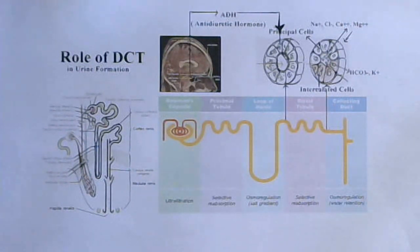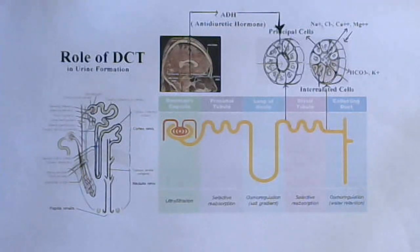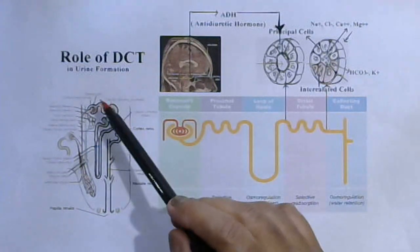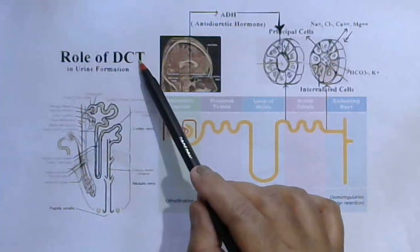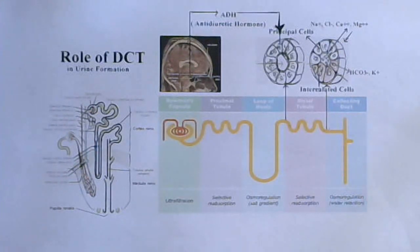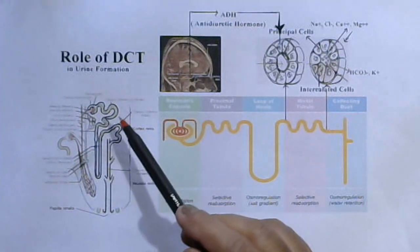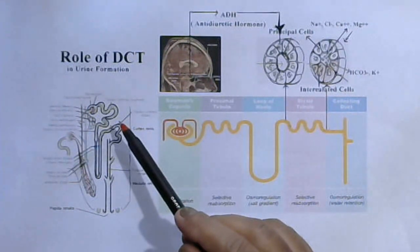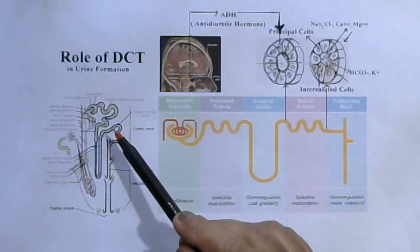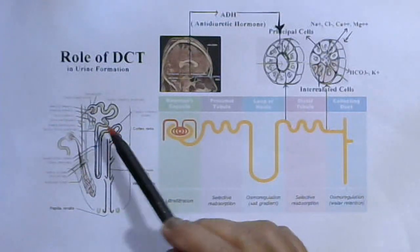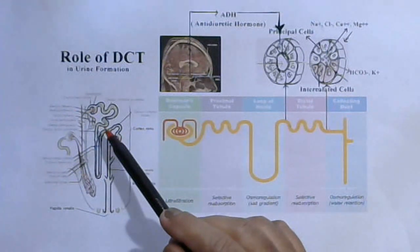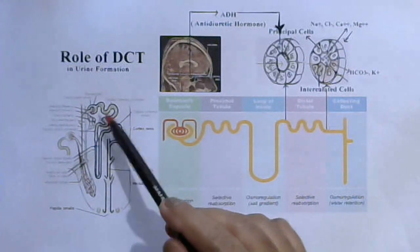Hi friends, welcome back to another very important class from your higher secondary first year syllabus from simplified biology. I am your teacher Dhruva Mahath. This class is on the role of the distal convoluted tubule in urine formation. Nephrons are very fine, highly coiled blood-filtering structures present in millions in each kidney, also called the functional units of the kidney. Anatomically, histologically, and functionally, each nephron is differentiated into defined parts.